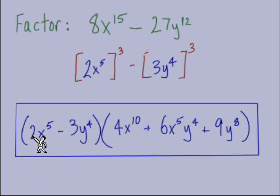We're going to go for the pattern in the first set of parentheses, A minus B. 2x to the fifth minus 3y to the fourth. That's our first set of parentheses. Second set of parentheses, 4x to the tenth plus 6x to the fifth y to the fourth plus 9y to the eighth. And there is our answer in factored form.